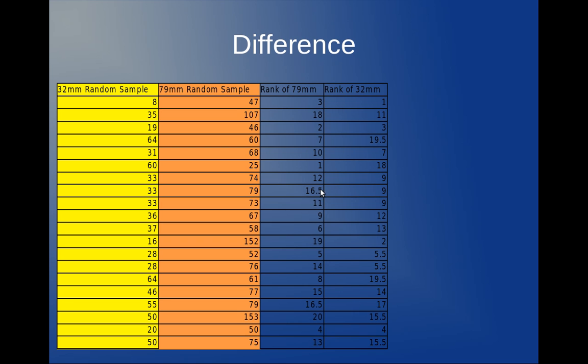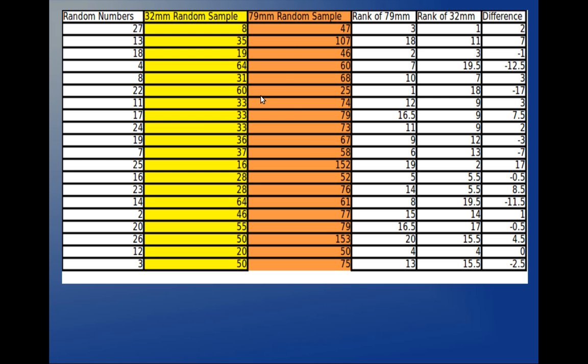Over here, here, here, and here. So now what I have to do is the second data rank which is 79, take away from the first which is 32. This is the reason why I did 79 ranked first. And that will give me the difference over here.